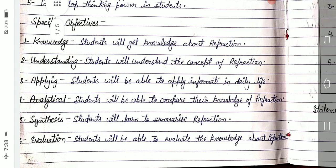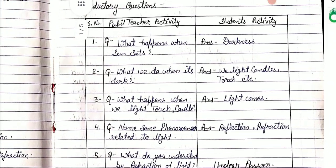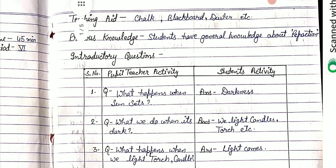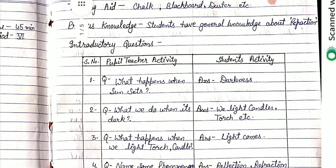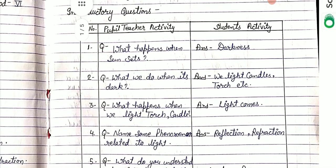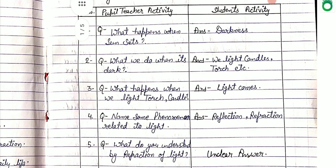After that we note teaching aids: chalk, blackboard, duster. Previous knowledge — students have general knowledge about refraction. After that we note introductory questions. We note five introductory questions. First one: what happens when the sun sets? Answer: darkness. We have a zigzag form in the introductory questions.